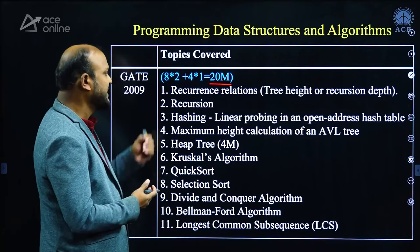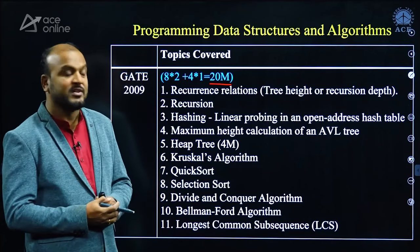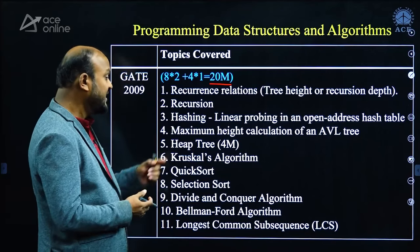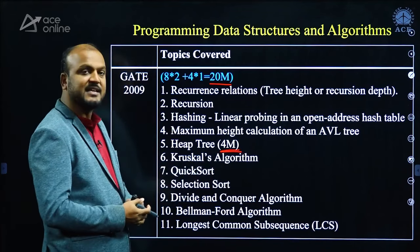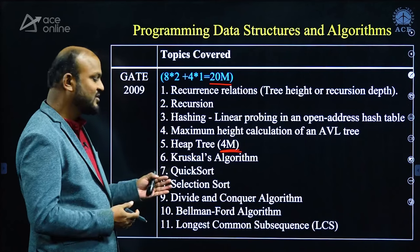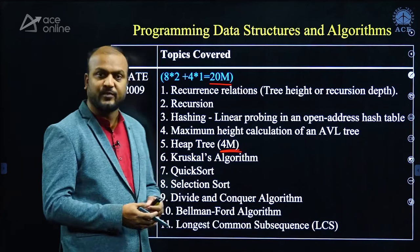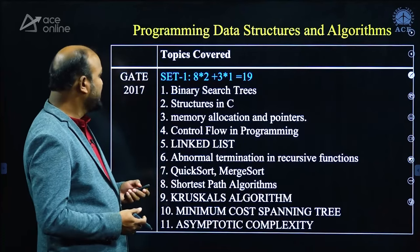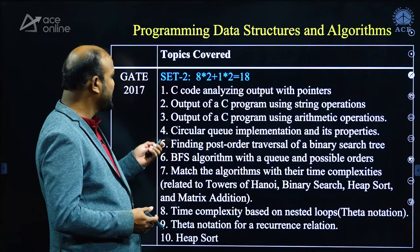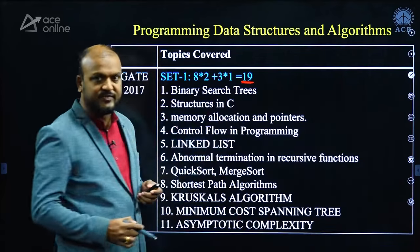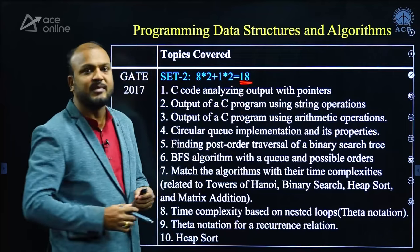In 2009, questions were asked from topics like recurrence relations, recursion, hashing, maximum height calculation of AVL trees, heap trees (a linked question of 4 marks), graph algorithms, quick sort, selection sort, divide and conquer, Bellman-Ford algorithm, and longest common subsequences. In 2017, there are two sets of papers — Set 1 had 19 marks from PDA and Set 2 had 18 marks from PDA.